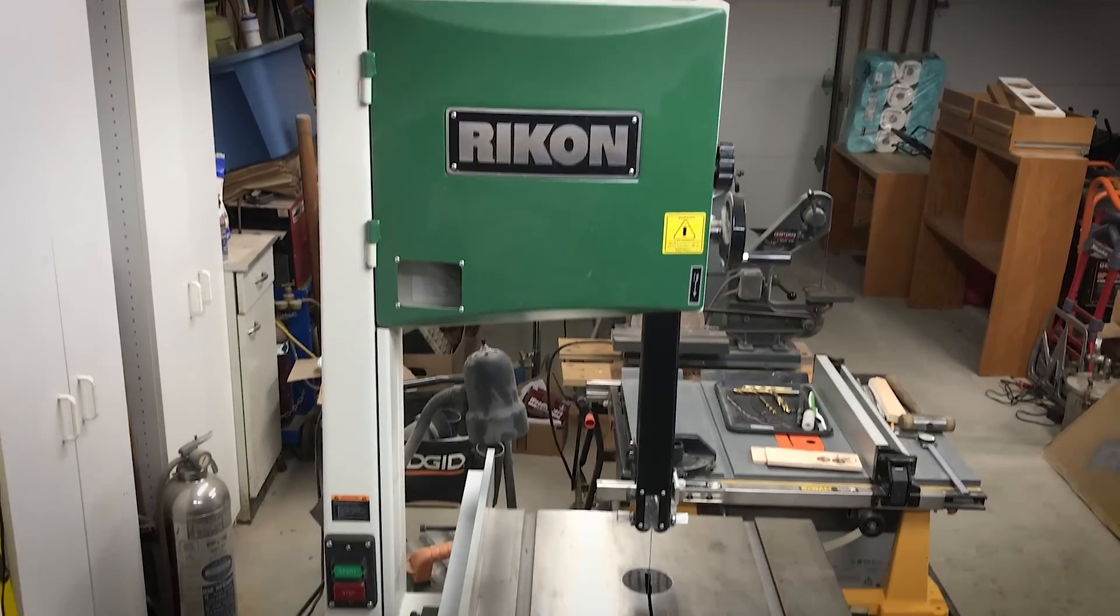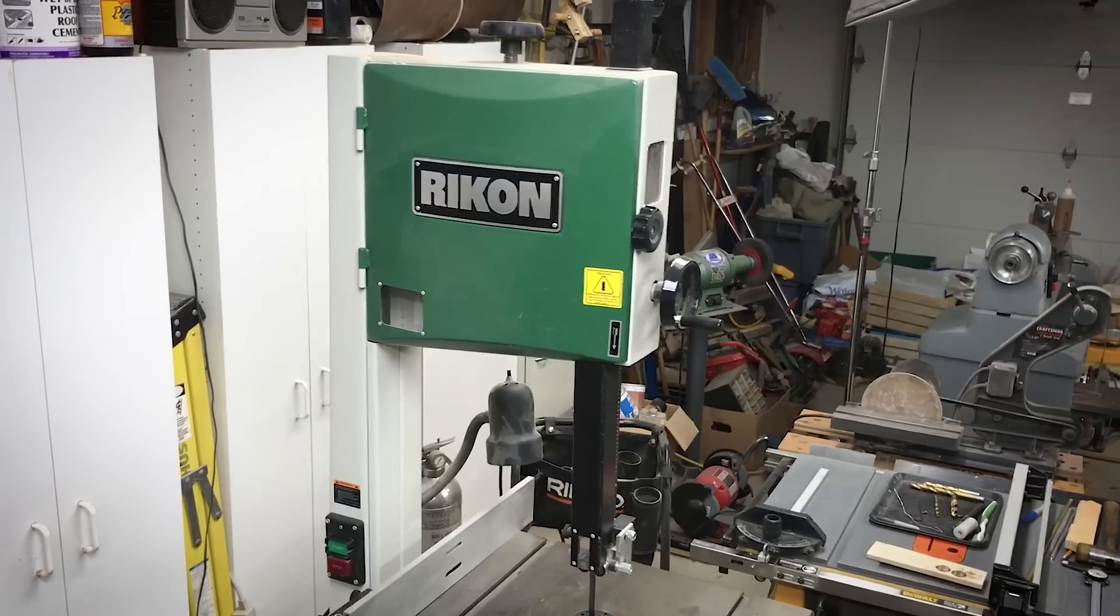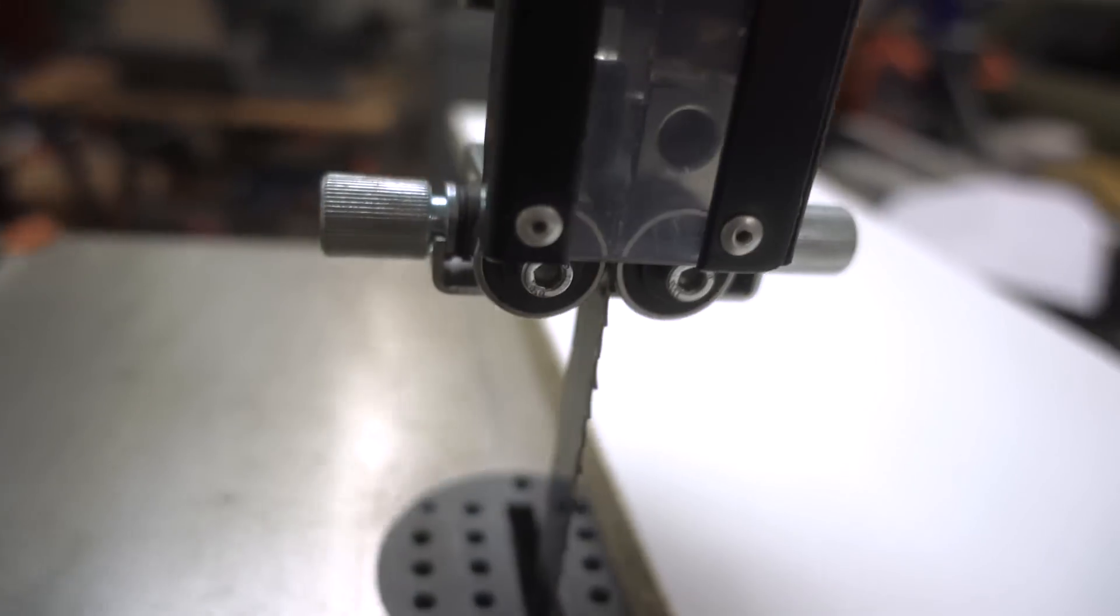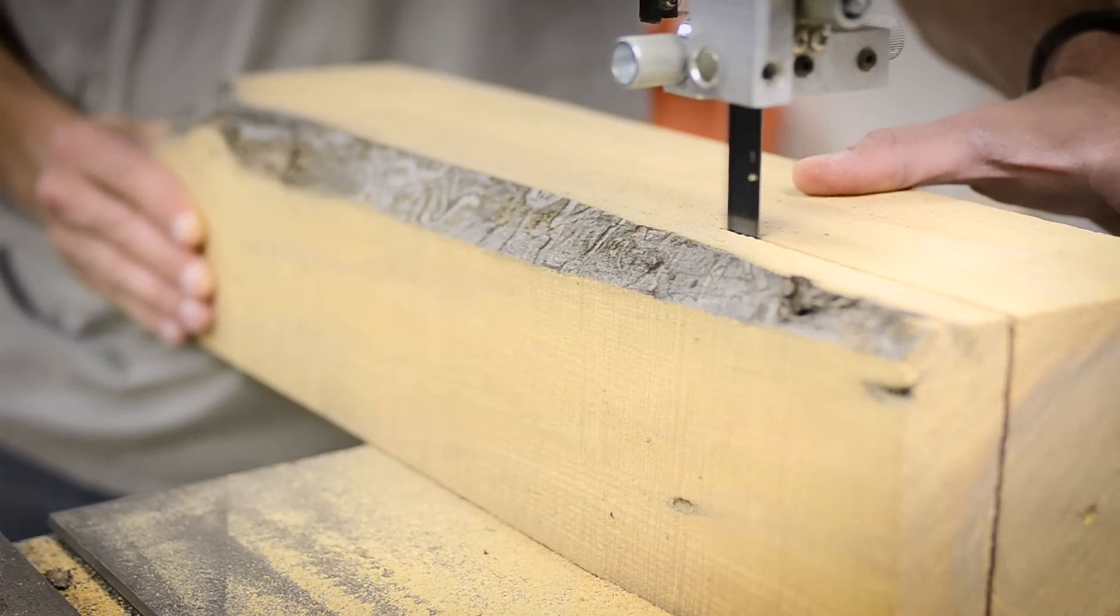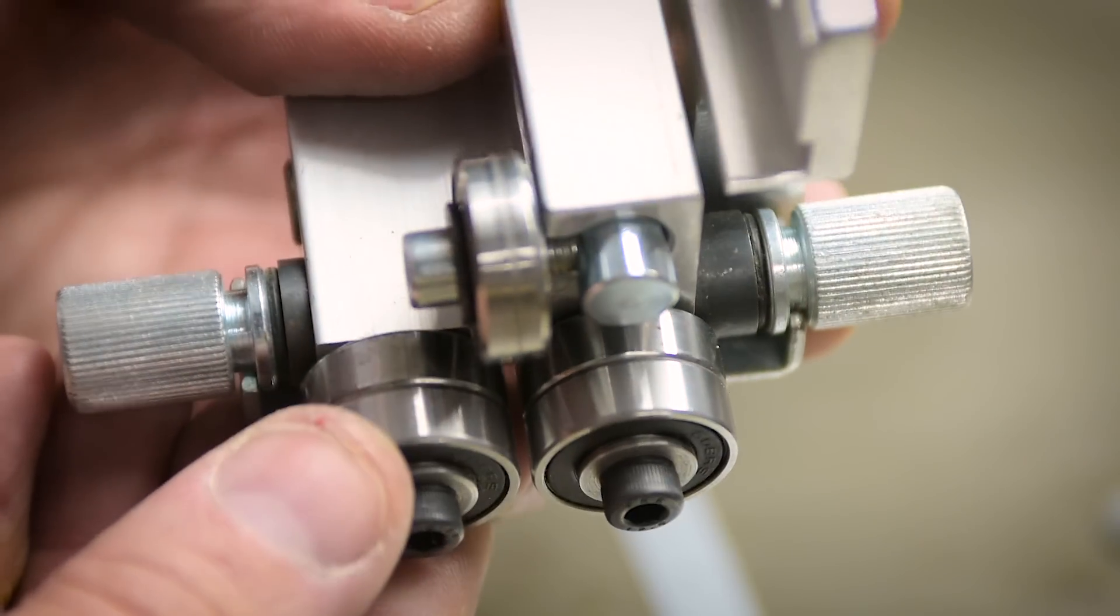This is my Rikon 14-inch bandsaw, model 10-325. It's about 7 or 8 years old. I bought it just before they started painting them blue. The single bearing guides that came with it work pretty good, but I process a lot of logs and therefore I often use 3 to 4 inch wide blades, so I was looking to upgrade to a double bearing setup.